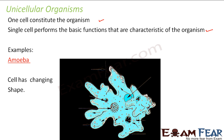Amoeba is generally found in marine regions, or on the decaying bottom vegetation of freshwater lakes or ponds. It has a single cell, and that cell decides the shape of the amoeba — when the cell changes its shape, the amoeba also changes its shape. In the amoeba, the intake of food, digestion of food, and excretion are all performed by that single cell.